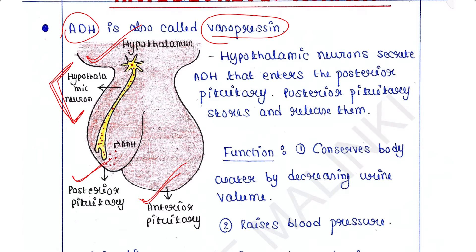Hypothalamic neurons secrete ADH that enters the posterior pituitary. The posterior pituitary stores and releases it. I have already made a lecture regarding hypothalamic control of the posterior pituitary — I would highly recommend you have a look at that lecture; the link is provided in the description box.